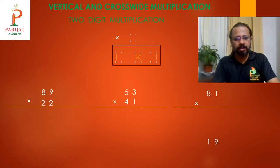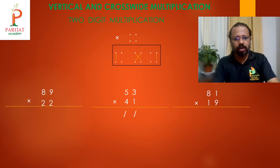We will start with 53 times 41. It is a two-digit multiplication, so we make three columns. According to our figure: last two connects — that means 3 times 1 is 3. Then the middle cross-connect: 4 times 3 is 12, and 5 times 1 is 5, so 12 plus 5 becomes 17.